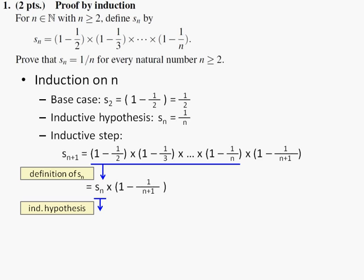so it can be written as 1 over n times n over n plus 1. And it is 1 over n plus 1. So the claim is proved.